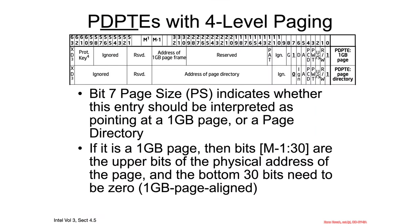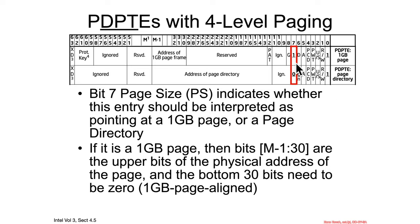Maybe I was over-interpreting it. Anyways, there are actually three possible interpretations for the page directory pointer table entry. There is also the present bit is zero version, but I left that out because if it's zero, all of this is ignored and any attempt at usage leads to a page fault. The difference between the other two interpretations is bit seven, the page size bit.